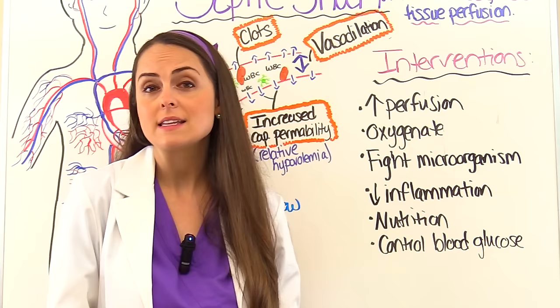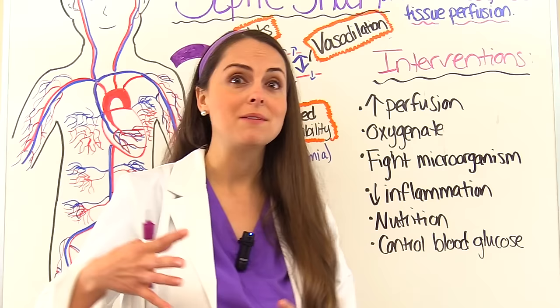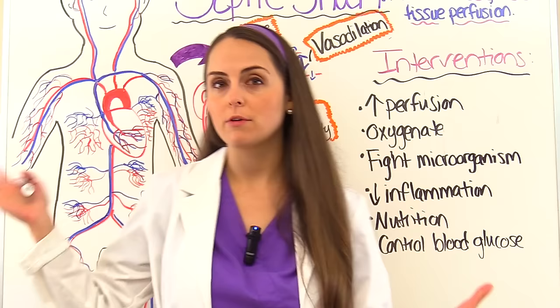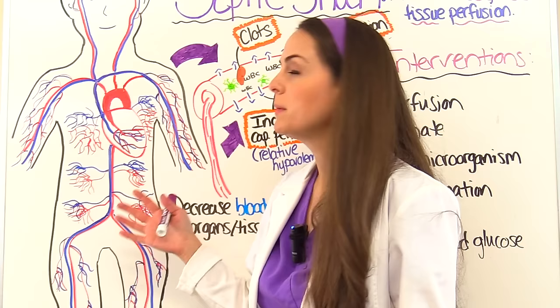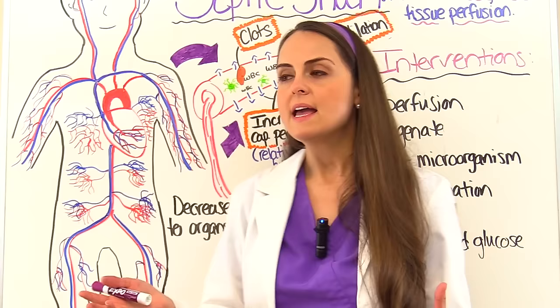Goals include increasing tissue perfusion through large amounts of fluid replacement, and if that doesn't work, vasopressors like norepinephrine to cause vasoconstriction instead of vasodilation, increasing our pressures. We also want to make sure the patient is oxygenated — keeping oxygen saturation greater than 95%. Patients in septic shock are at risk for developing respiratory failure due to acute respiratory distress syndrome (ARDS).